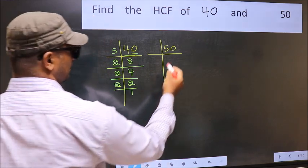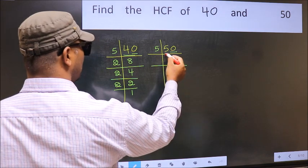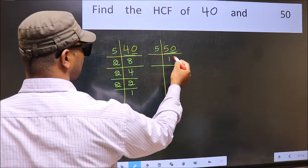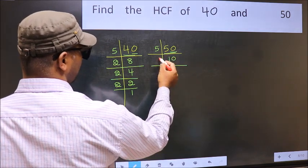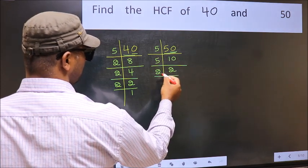Now the other number. Last digit is 0 so take 5. When do we get 50 in the 5 table? 5 times 10 is 50. Now 10 is 5 times 2 is 10. 2 is a prime number, so 2 times 1 is 2.